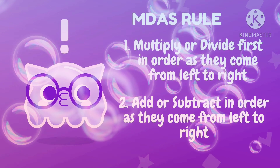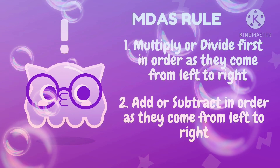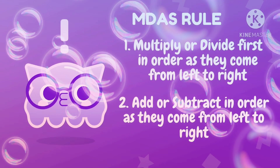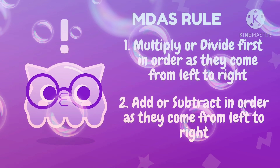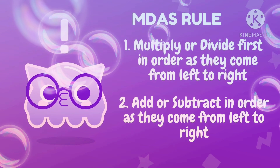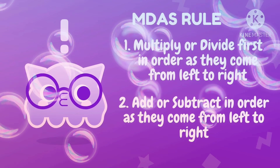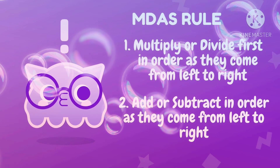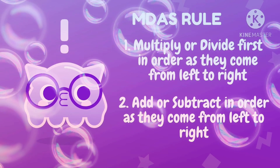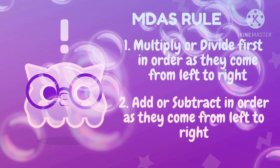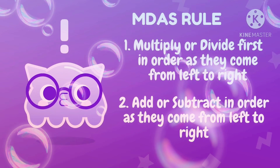MDAS stands for the four basic operations in mathematics: multiplication, division, addition, and subtraction. In a series of operations, certain rules must be followed to arrive at one specific answer. The MDAS rule must be followed correctly to get the right answer. It states that we have to multiply or divide first, in order as they come from left to right. Let's apply this MDAS rule to the given number sentences.